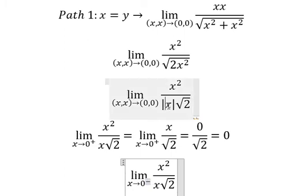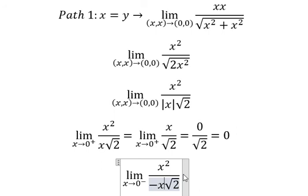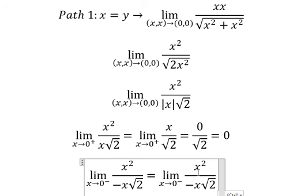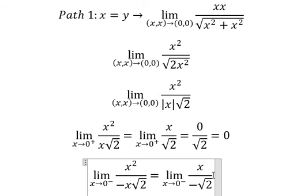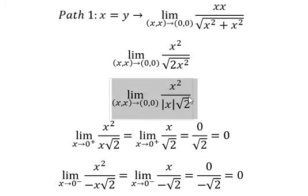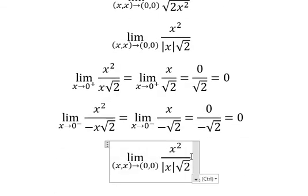Now we need to consider the limit on the left. On the left, this one we have negative s. Now we simplify s, we put zero in here, and we have zero. So the limit on the right and the limit on the left are both zero, so this one equals zero.